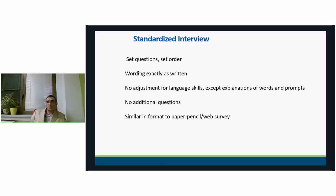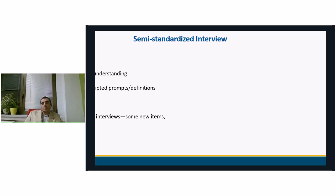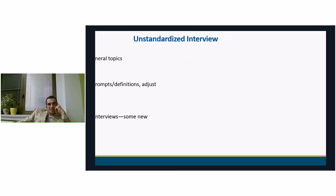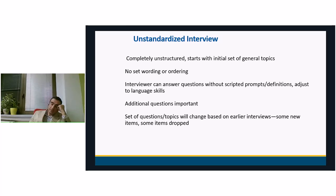Unstructured interviews are mostly at one end, while standardized interviews ensure we have a preset set of questions in a set order. The wording should be read exactly as written, no adjustment should be made except for some explanations, and no additional questions are allowed — it is similar to quantitative research. On the other hand, we have the semi-standardized interview, which is more or less structured but with a flexible order, adopted wording, and additional questions sometimes allowed. Some new items can be visited and others dropped. At the end, we have the unstandardized interview, which is completely unstructured with open-ended questions, back-and-forth exchanges, no fixed order, and topics can change based on earlier interviews.